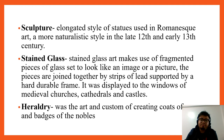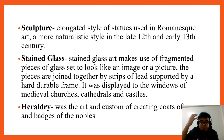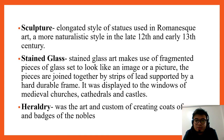Sculpture: elongated styles of statues were used in Romanesque art to depict saints, emperors, and other subjects from the medieval period. Stained glass: used as fragmented pieces of glass set to look like an image or picture. The pieces are joined together by strips of lead supported by a hard, durable frame, displayed in windows of medieval churches, cathedrals, and castles.